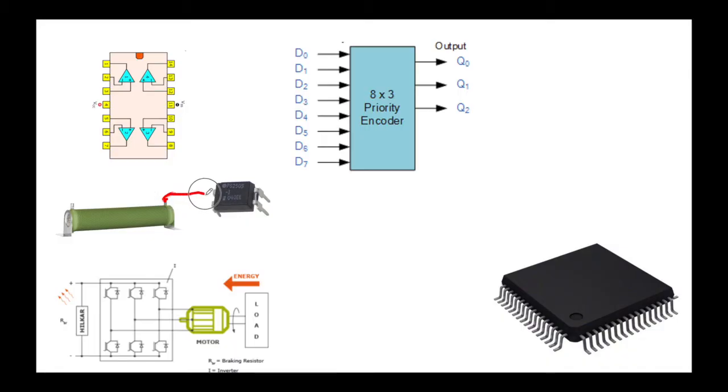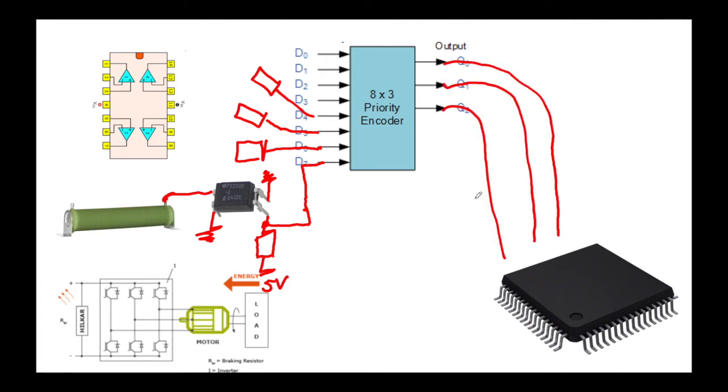Information about whether the brake resistor is connected is transmitted through the optocoupler. From the optocoupler output, after the pull-up resistor, one line enters the encoder input. In this format, information about whether the brake resistor is installed is given to the microcontroller. The encoder, having received 8 different signals, communicates to the microcontroller through 3 pins.